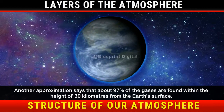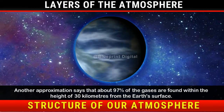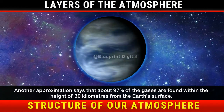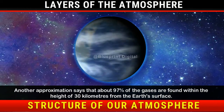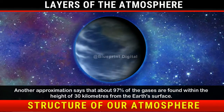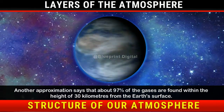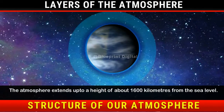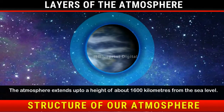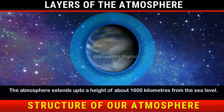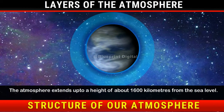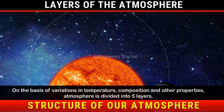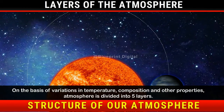Another approximation says that about 97% of the gases are found within the height of 30 km from the earth's surface. The atmosphere extends up to a height of about 1600 km from the sea level.